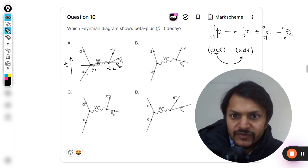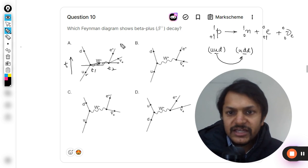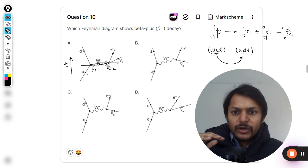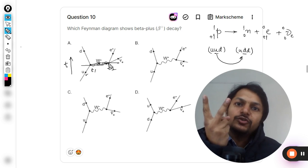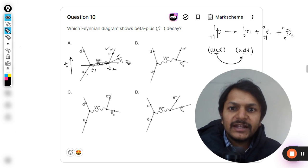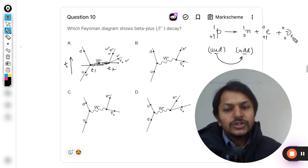This W positive goes to this point and divides itself into two parts. One is an anti-particle, another is a particle. Both of the directions shown are correct. This is a positron and this is the electron neutrino.